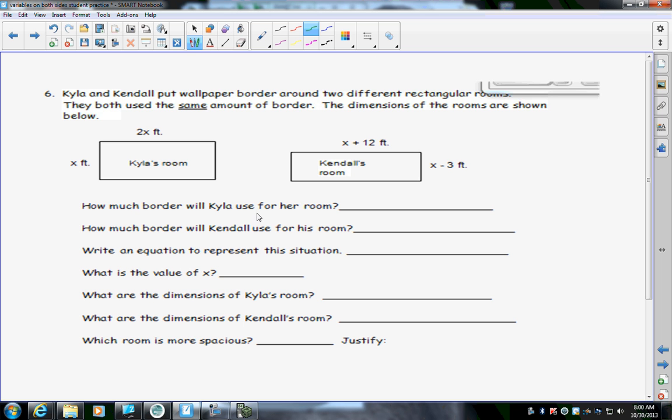Okay, let's look at the next one because it's kind of cut off on y'alls. And you want to make sure you fill this in. It says Kyla and Kendall put wallpaper border around two different rectangular rooms. They both use the same amount of border. The dimensions of the room are below. When you're talking about a border, what is that that you're, if you're talking about the same amount for border, what is that mathematically when you do border? Perimeter. Okay, so the first thing says, how much border will Kyla use for her room? Now, remember, we need to go through and label our sides. X and 2X. Border, add them all up. 2X plus 2X is 4X. 5X, 6X. So, she has 6X on her perimeter.